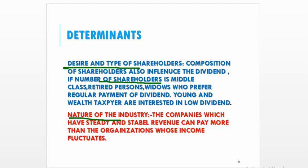Framing of a suitable dividend policy is also influenced by the nature of the industry. Companies which have steady and stable revenue can pay more dividend than organizations whose income fluctuates and whose sales are uncertain. There is more risk in that industry, so such companies should avoid payment of high dividend.